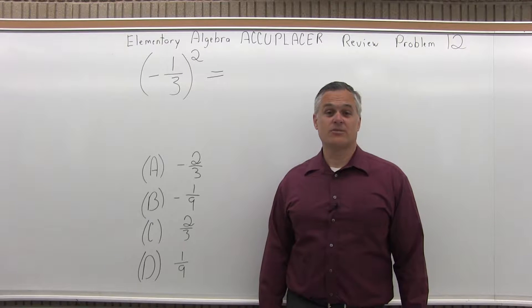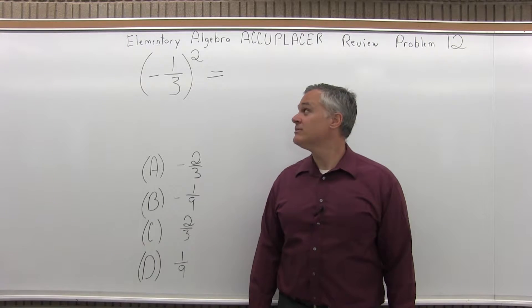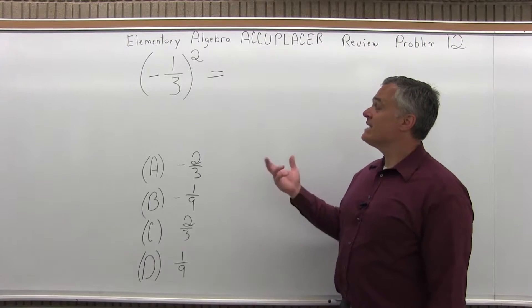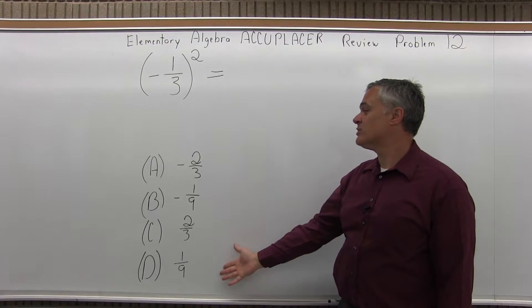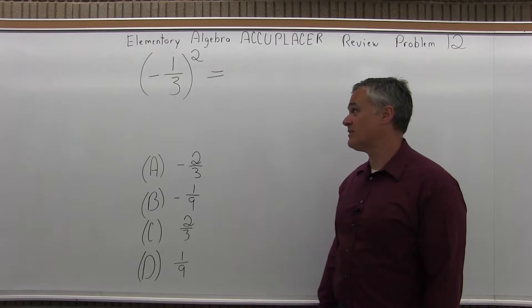This is the Elementary Algebra Accuplacer Review, Problem 12. It has negative one-third in parentheses raised to the second power and they want to see if it's equal to one of four options that's provided.